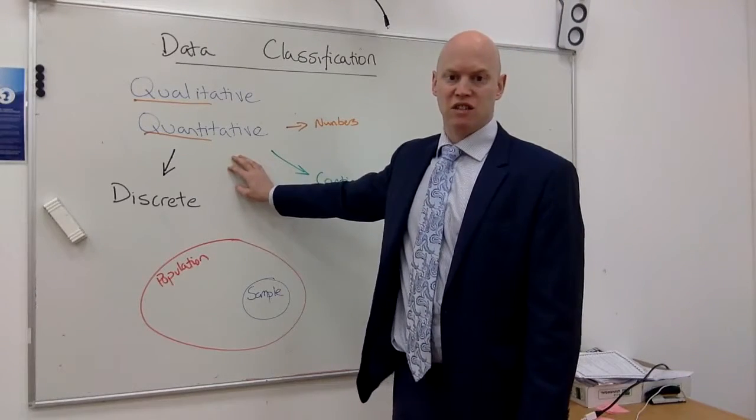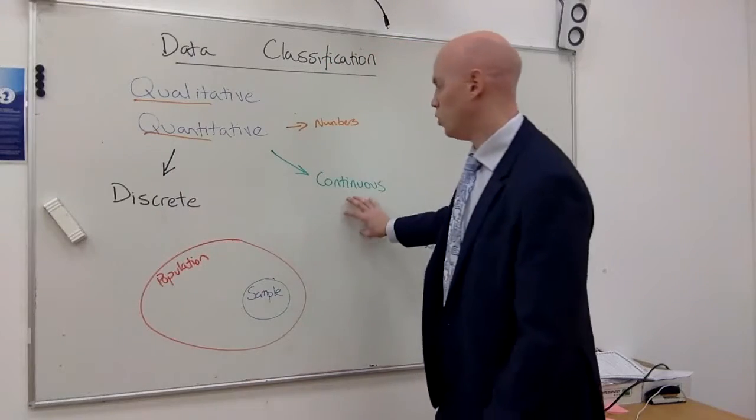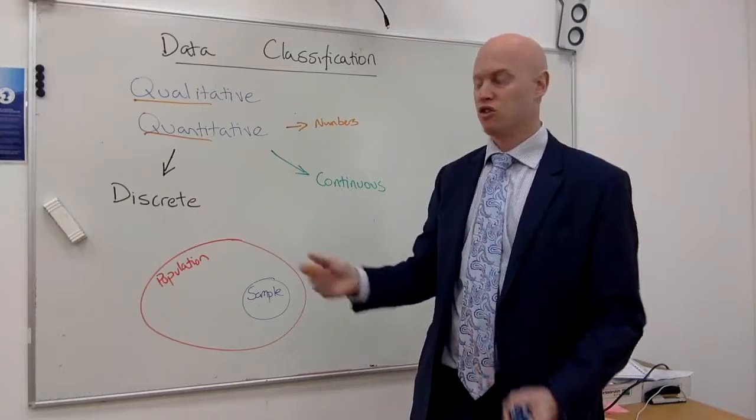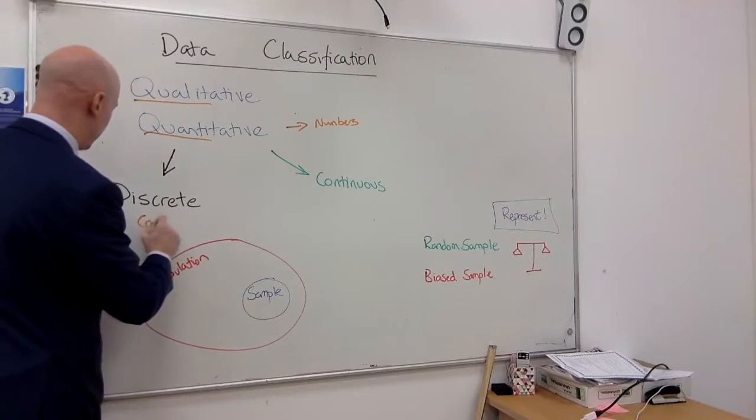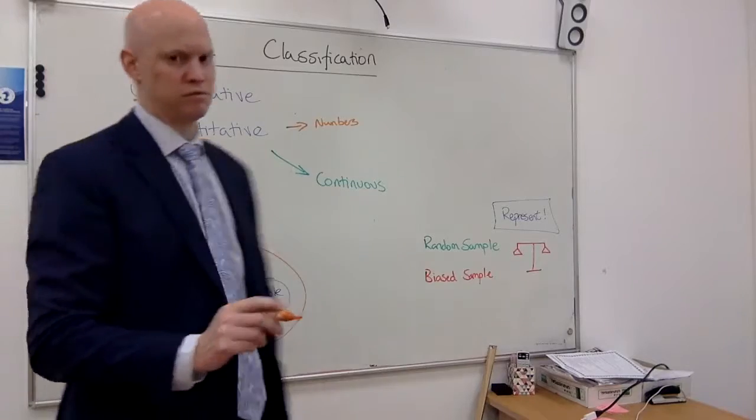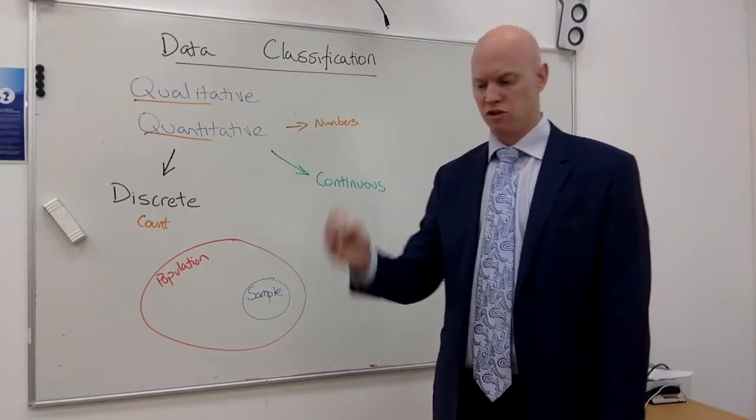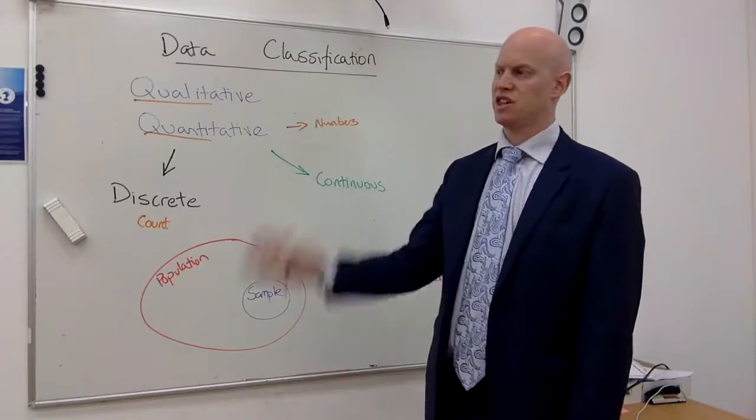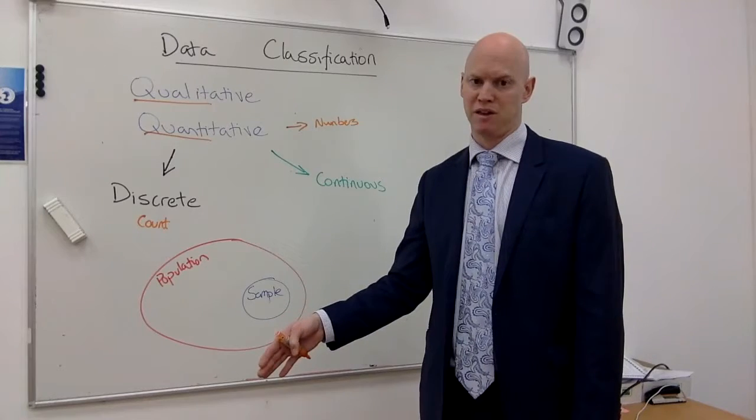Having narrowed it down to numbers, quantitative, we're now saying that data is either discrete or continuous. Now discrete data, we describe that as numbers you count. So you can only be a specific number. There's four eggs in the basket, there's six eggs in the basket, there's ten eggs in the basket. You can't have 3.2 eggs in the basket.